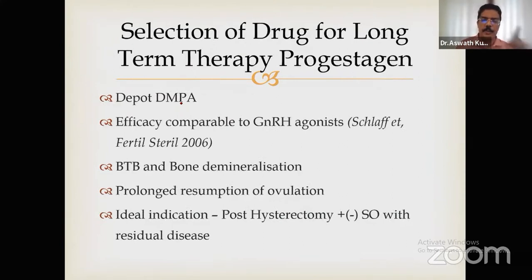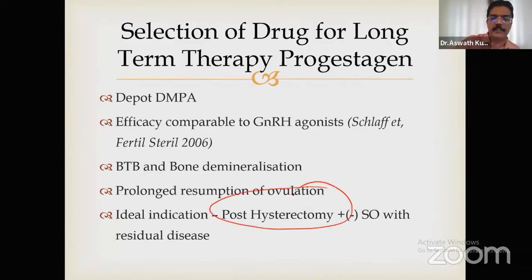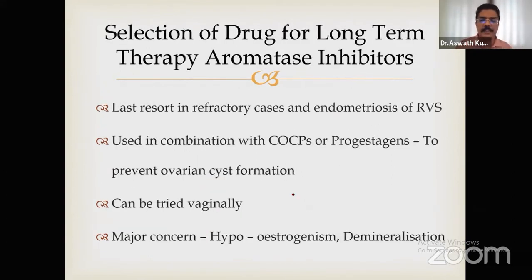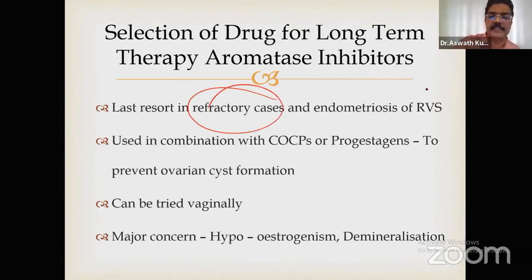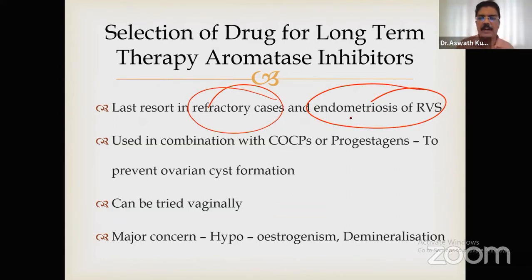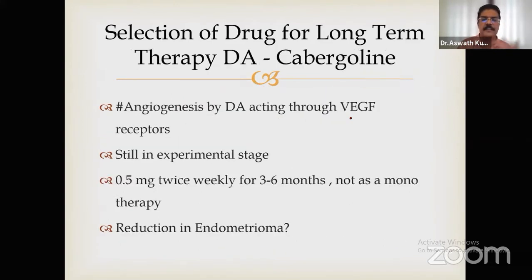DMPA: the main indication is post-hysterectomy patients, with or without removal of ovaries, where we suspect residual disease. It is a very cheap and effective drug that can be given for two years. Aromatase inhibitors are for refractory cases and for endometriosis of the rectovaginal septum and extra-pelvic sites. These indications are not rigid — use them when you have an indication.